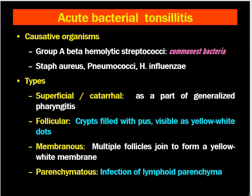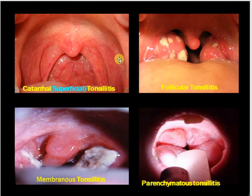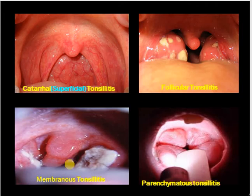Acute membranous tonsillitis occurs when multiple follicles of follicular tonsillitis join together to form a yellow-white membrane — we must differentiate this from other membrane-forming conditions. Acute parenchymatous tonsillitis is infection of the lymphoid parenchyma, where the tonsils are enlarged in size. Looking at the pictures: catarrhal tonsillitis shows red, congested tonsils and posterior pharyngeal wall; follicular tonsillitis shows white follicles; membranous tonsillitis shows membrane formation; and in parenchymatous tonsillitis the tonsils are large and almost kissing together.